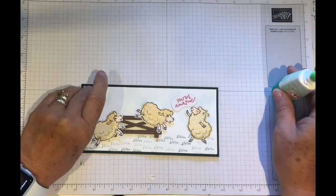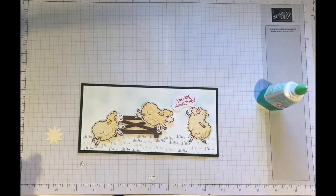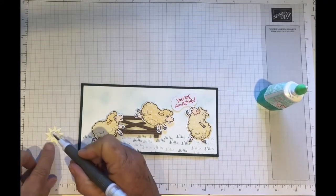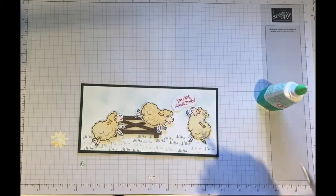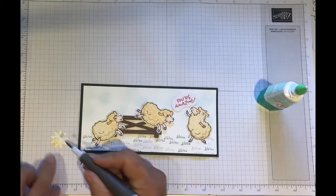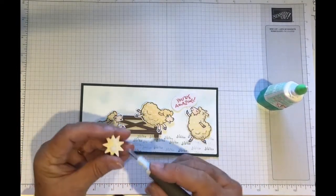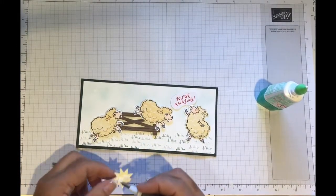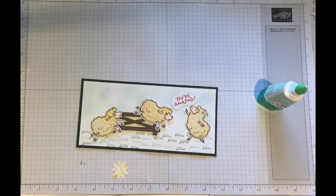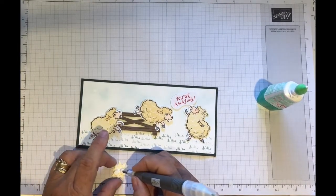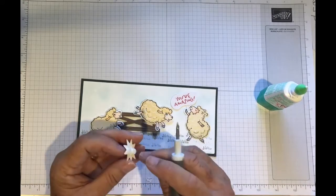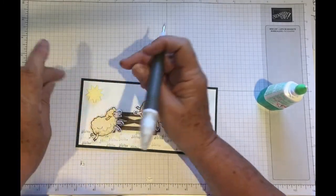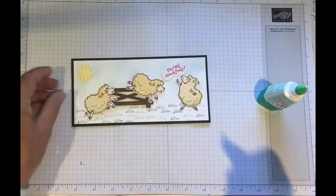And last but not least, we need to add the sun. And the sun is always shining. So I've decided I'm adding dimensionals. But I'm actually going to add two layers. I just think it adds interest to the card. It brings it up higher than any of the others. So there we are.